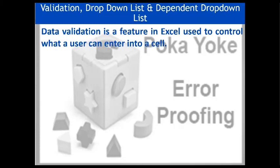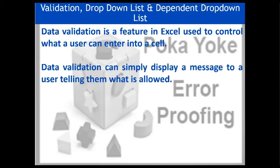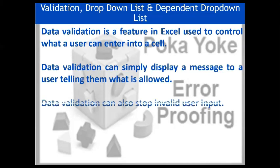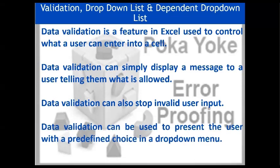Coming back to our topic: data validation is a feature in Excel used to control what a user can enter into a cell. Data validation can simply display a message to a user telling them what is allowed. It can also stop invalid user input, and it can be used to present the user with a predefined choice in a drop-down menu — basically restricting invalid data entry, suggesting what data needs to be entered, or providing users with various options.